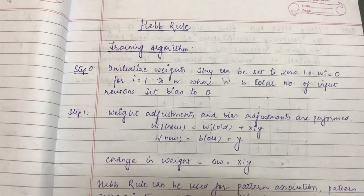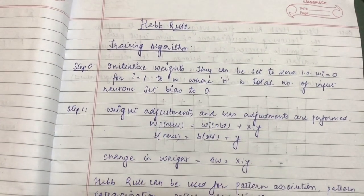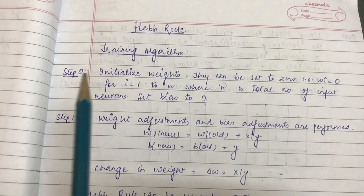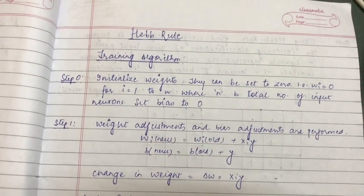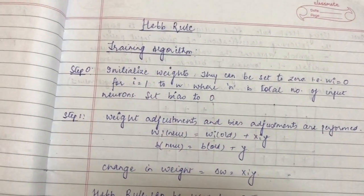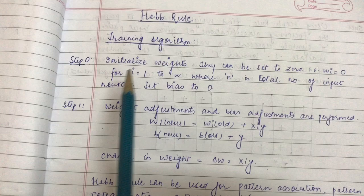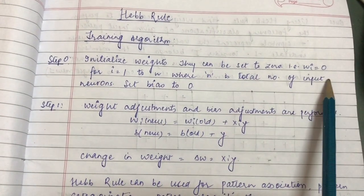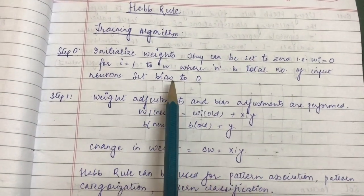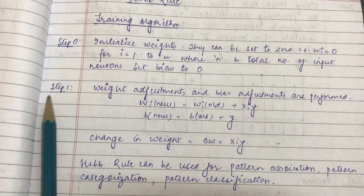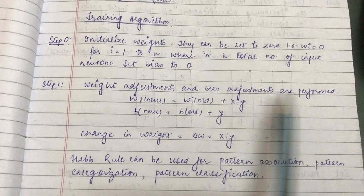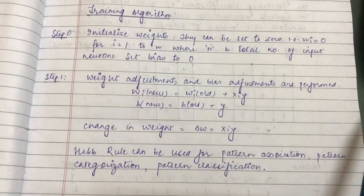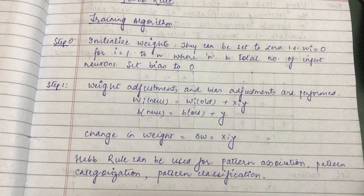Hello friends, today I am back again with a new tutorial. This time I'll be talking about Hebb rule. Let us discuss the algorithm first, then we'll do a question. Step 0 is to initialize the weights — we can set the weights to 0 and also set the bias to 0. Step 1 is to adjust the weights and bias.